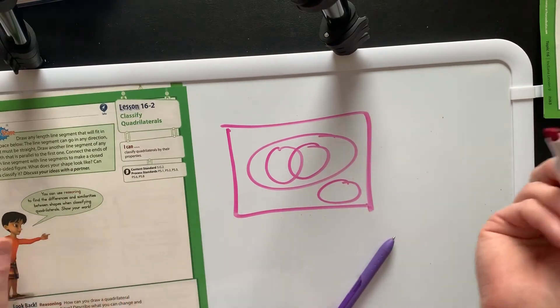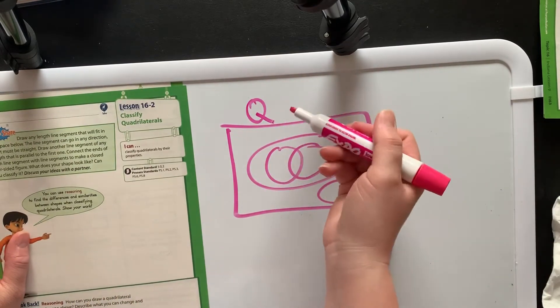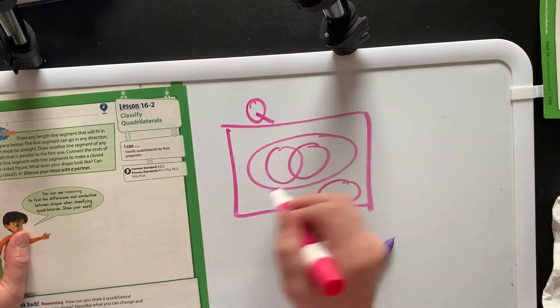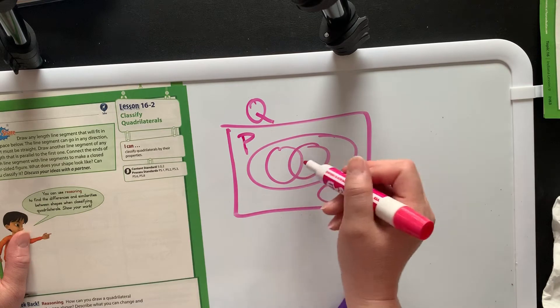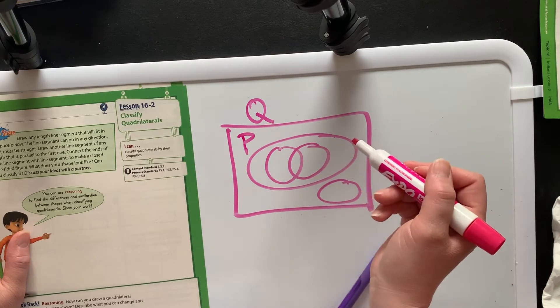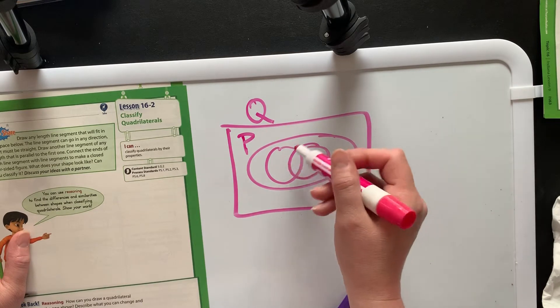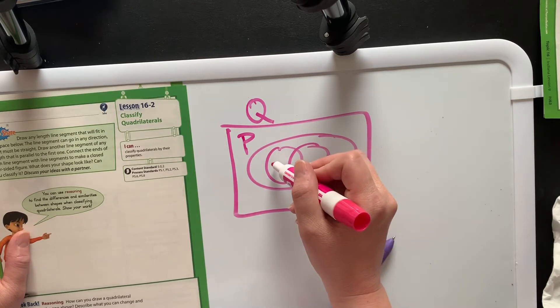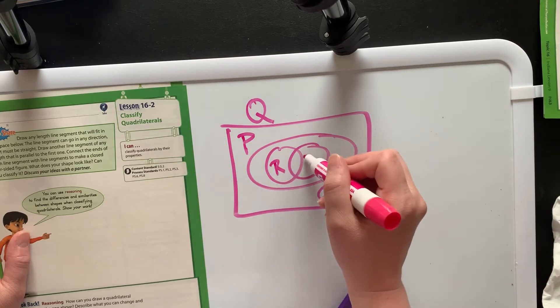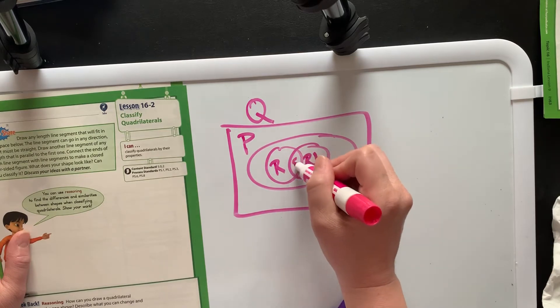Basically this is a really quick way of describing quadrilaterals. So quadrilaterals are all of these, and inside we have parallelograms, and then inside the oval we have rectangles and we have rhombuses, and then we have a square, and then we have a trapezoid.